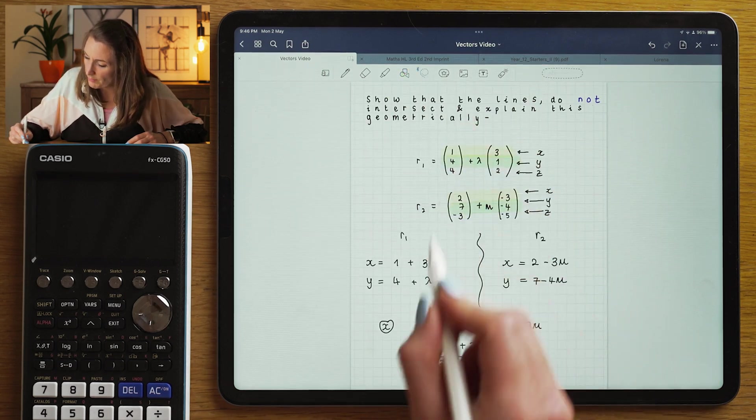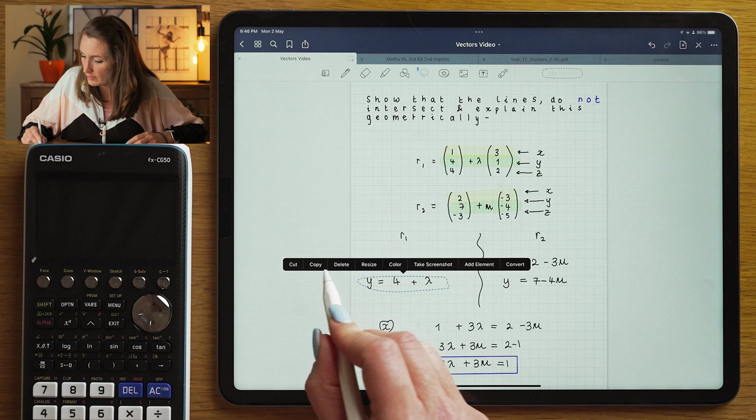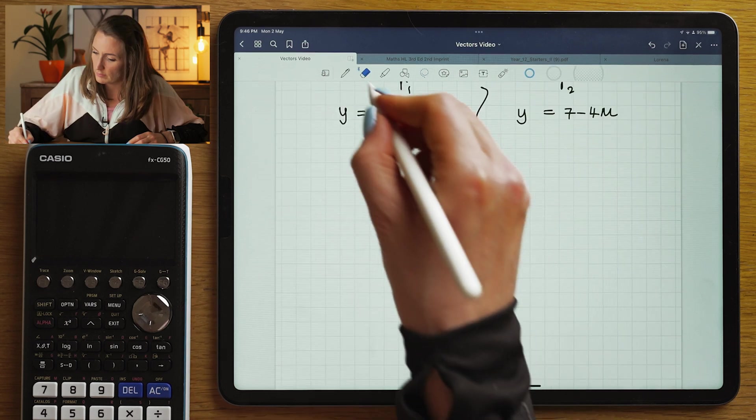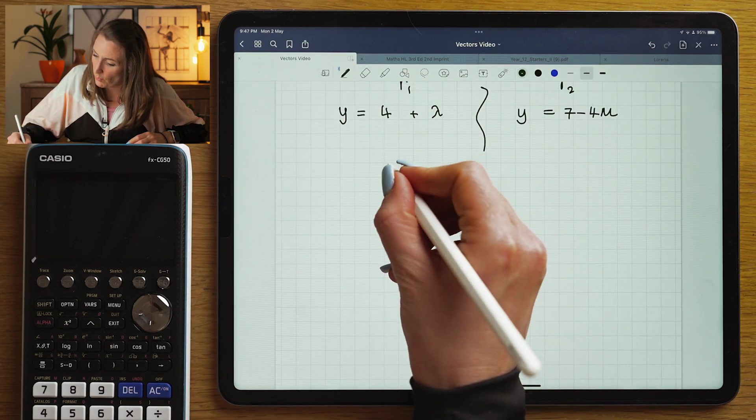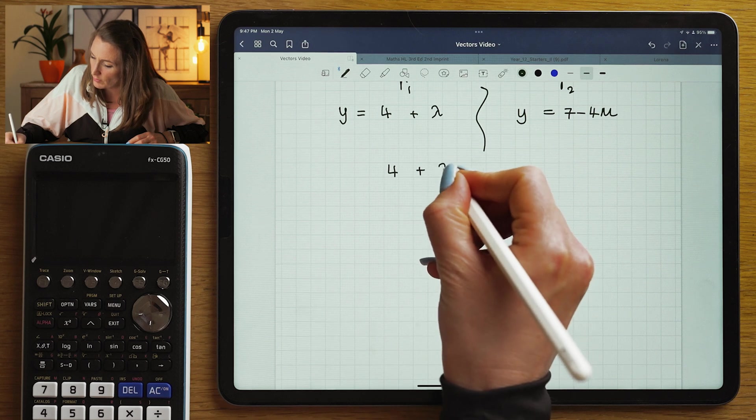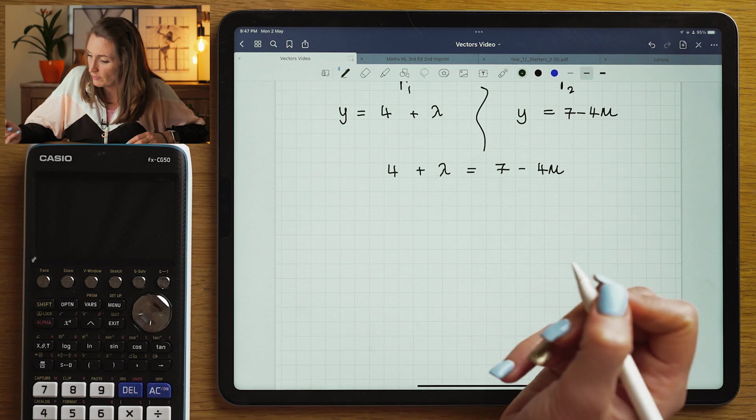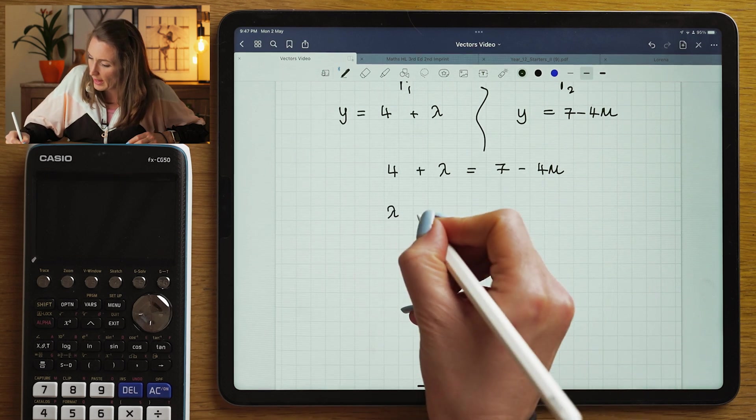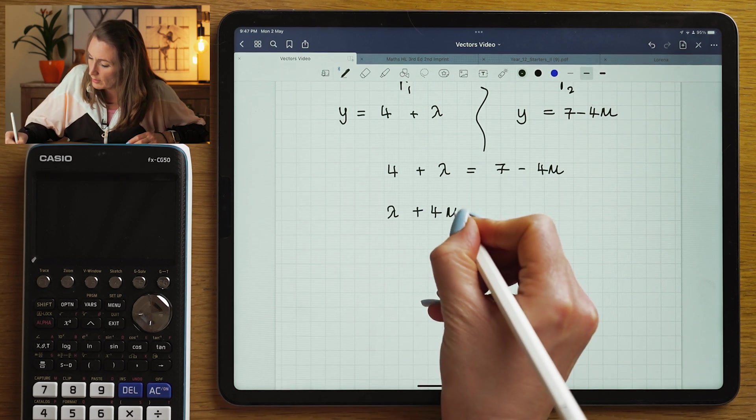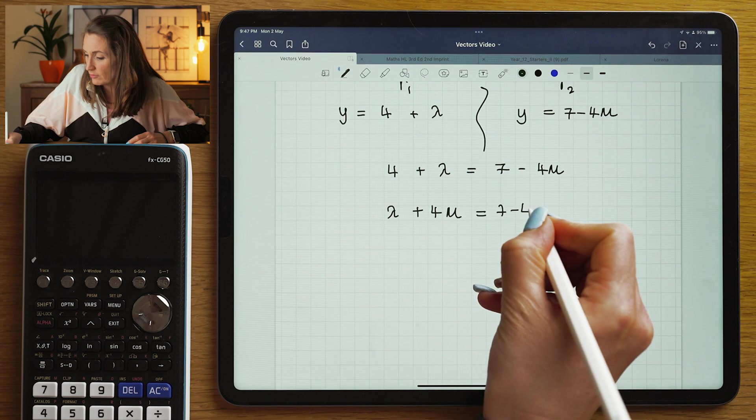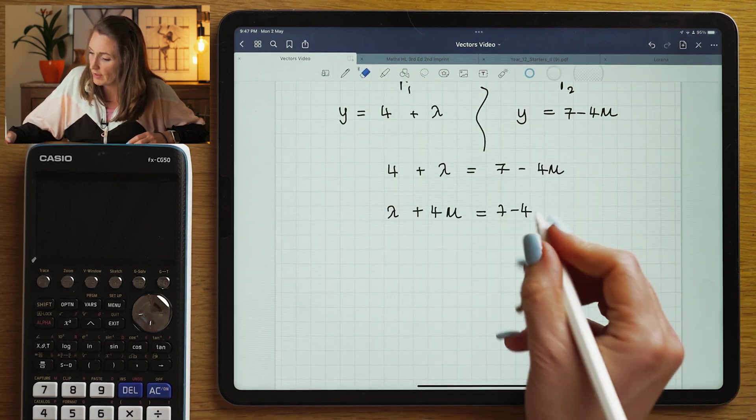I'm going to repeat that process for my Y coordinates. So if I let my Y coordinates equal to each other, I would get 4 plus lambda equals 7 minus 4 mu. I'm going to bring the 4 mu to the other side, so I'm going to get lambda plus 4 mu equals to 7 minus 4, which is in fact 3.